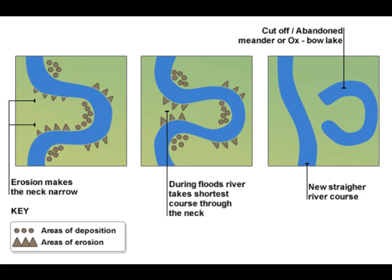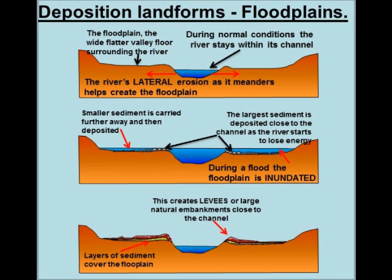In the lower course of a river, levees can form. These are natural embankments along the edge of a river channel. During a flood, the heaviest eroded material is deposited closest to the river channel, as the river loses energy and can no longer carry it. Floodplains can form when a river floods, the water slows down and deposits all the alluvium that has been transported over the flooded area, which raises the floodplain.